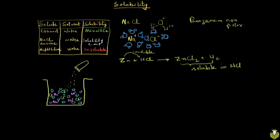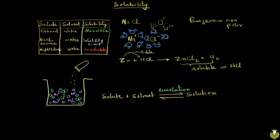As you keep adding salt and it continues to dissolve, the population of ions in solution becomes much higher. So the probability of these ions colliding, recombining, and recrystallizing is also higher. There comes a point where you achieve dynamic equilibrium: solute plus solvent going into solution (dissolution) and solution breaking back into solute and solvent (crystallization). The rates of these two processes become equal, and we say the solution is in dynamic equilibrium with the solute and solvent.